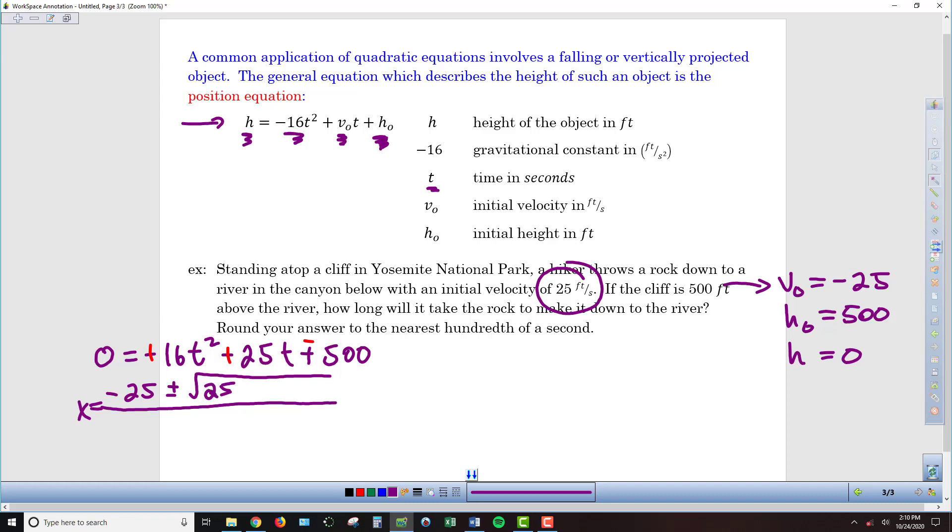it's going to be 25 squared. So, b squared, 25 squared, minus 4 times a is 16, times c is negative 500. And then, in the bottom, we have 2 times a, so 2 times 16.